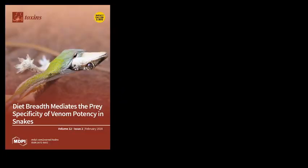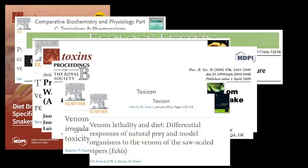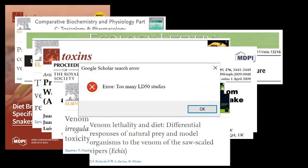Previous studies using LD50 measures have helped determine how predatory traits evolve, such as our previous study that showed how the number of taxa in a snake species' diet determines its venom's specificity towards its prey. There are numerous other studies that used LD50s to demonstrate similar results in a range of venomous species, not just snakes.